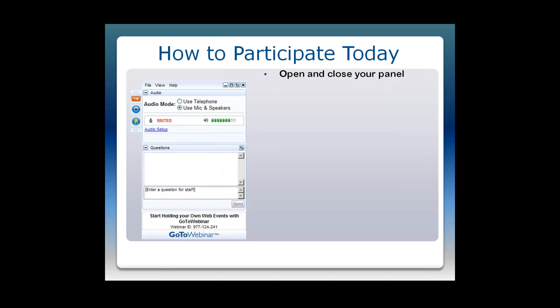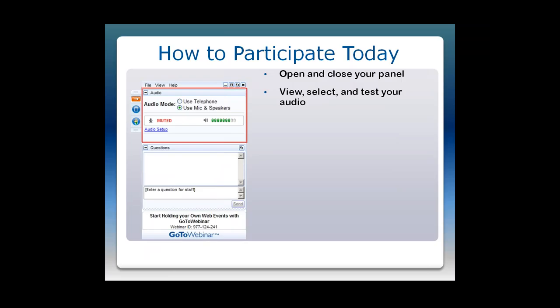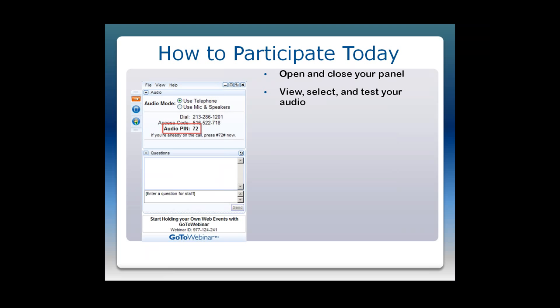By clicking the orange arrow, you can open and close your control panel. From the view menu, you can set the control panel not to auto-hide. The audio pane provides audio information; by default you have joined via mic and speakers. Click audio setup to select your speaker or headset, or join via telephone by selecting Use Telephone — the dial-in information and audio PIN will be displayed. To ask a question, simply type it and click Send. Under the Questions tab is the new Handouts tab, where you can download a PDF of these slides.